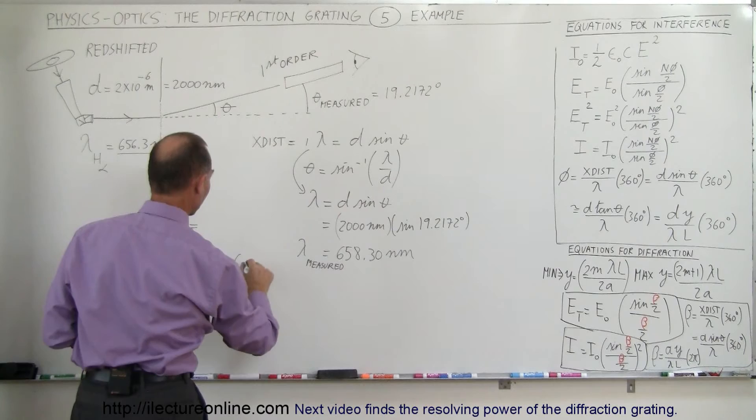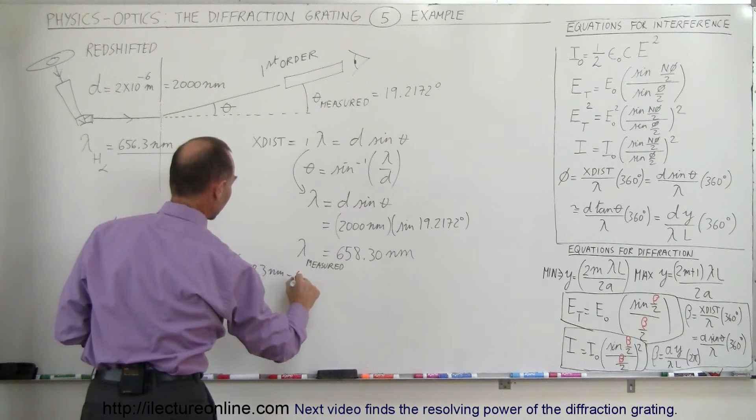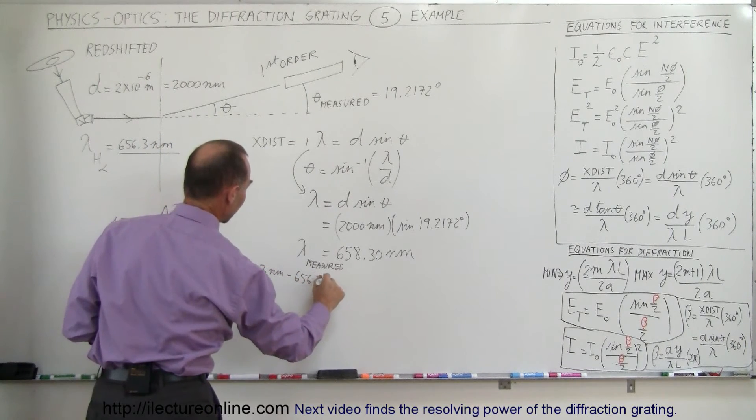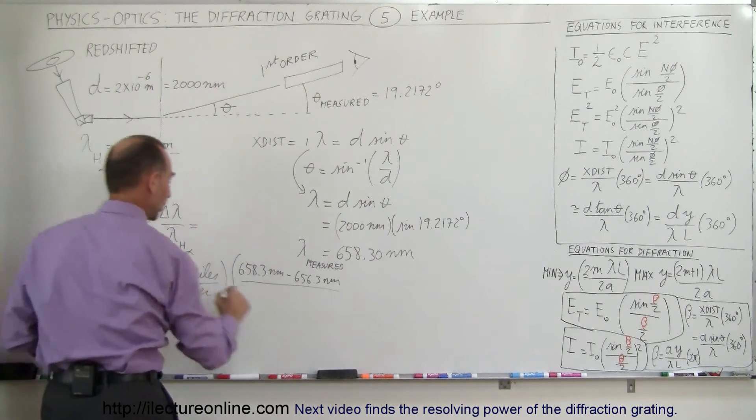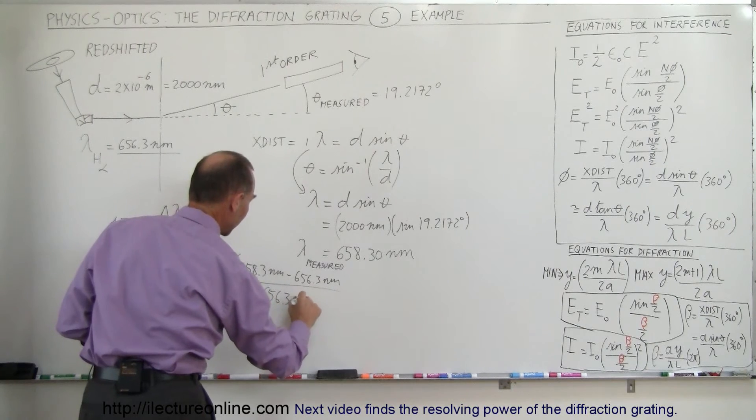Times the shift in the wavelength. Notice we went from 656.3 to 658.3, so that's going to be 658.3 nanometers minus 656.3 nanometers, divided by the wavelength that it normally is when it's not moving, 656.3 nanometers.